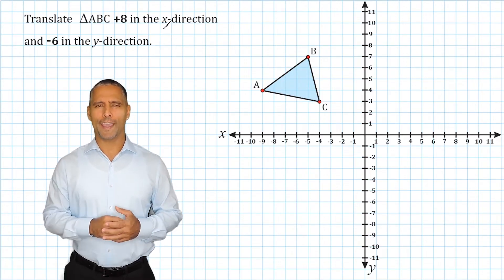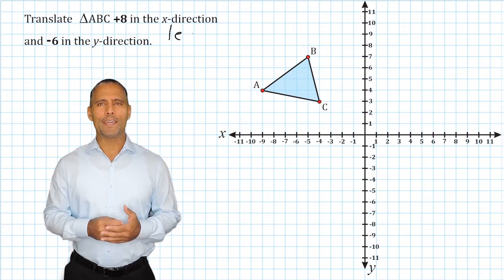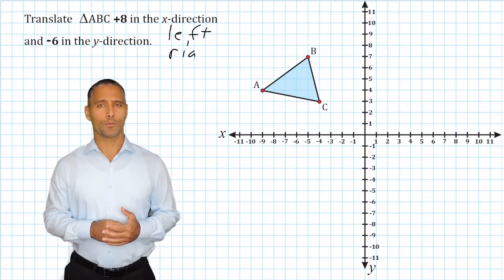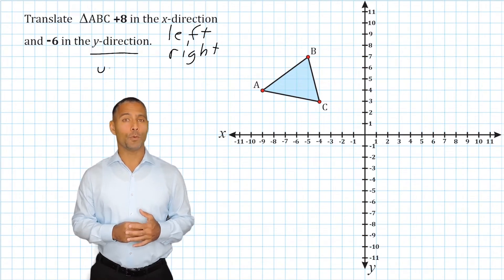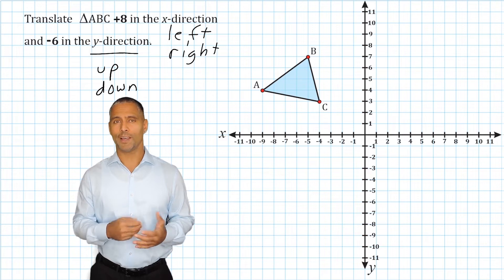A movement in the x-direction means moving either left or right because the x-axis runs in a direction that is either left or right. A movement in the y-direction means moving up or down because the y-axis runs vertically or up or down.